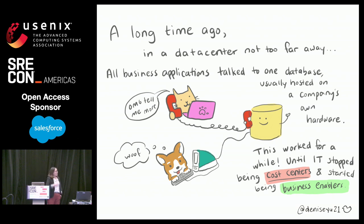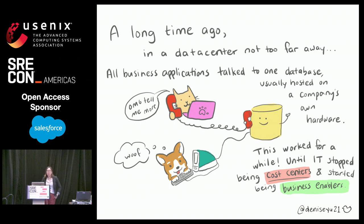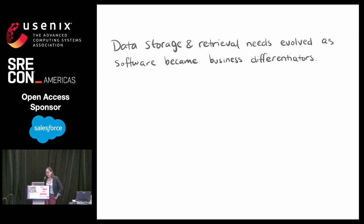This worked for a really long time until IT stopped being a cost center we had to deal with, and started being a business differentiator, an enabler, and a competitive advantage, which meant that we as an industry had to start taking IT much more seriously. Today, it's usually not sufficient to have just one Postgres living on-premises running all of your business data for most companies.